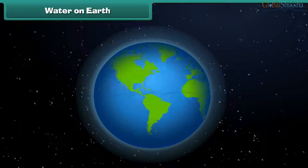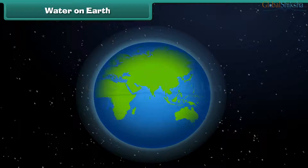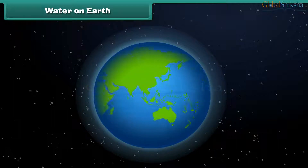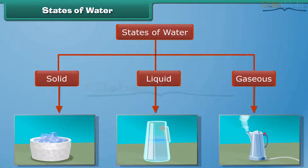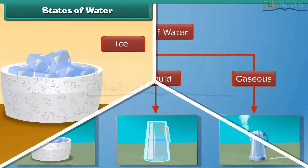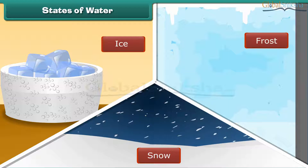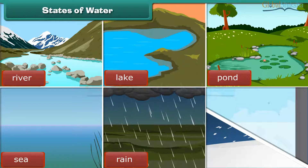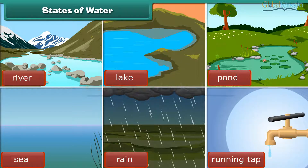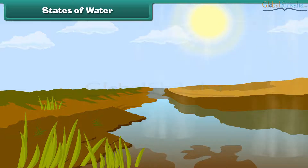Earth is also called the blue planet because when seen from space it appears blue, due to water. Water exists in three states: solid, liquid, and gaseous. Ice, snow, and frost are examples of water in the solid state. You see liquid water in rivers, lakes, ponds, sea, when it rains, and the water coming out of a tap.